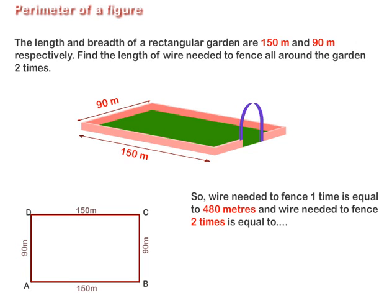So, wire needed to fence one time is equal to 480 m. And wire needed to fence two times is equal to 480 multiplied by 2, that is 960 m.